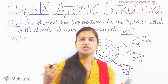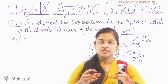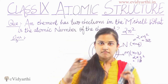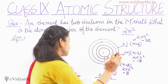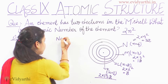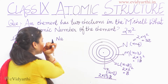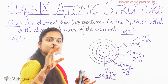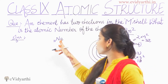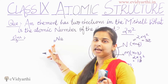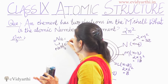Now, if we need to find the electronic configuration of an element — electronic configuration means how many electrons are distributed in each shell. For example, suppose I need to write the electronic configuration of sodium. The number of electrons in sodium equals the number of protons, which equals the atomic number. Sodium's atomic number is 11, so the number of electrons in sodium is 11.